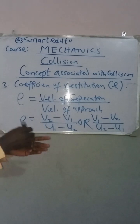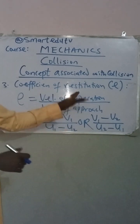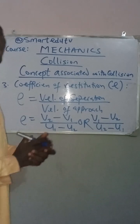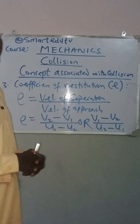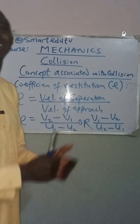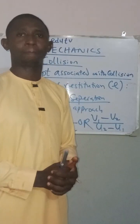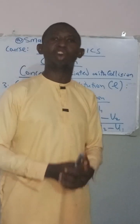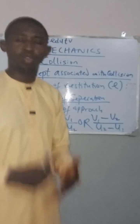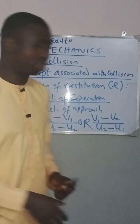The next thing we are going to look at is the classes of collision. There are two main classes of collision. The first one is called head-on collision, while the second class is called oblique collision. Please note that the classes of collision are different from the types of collision.